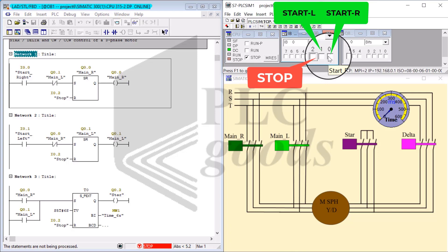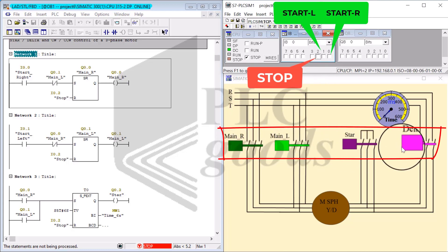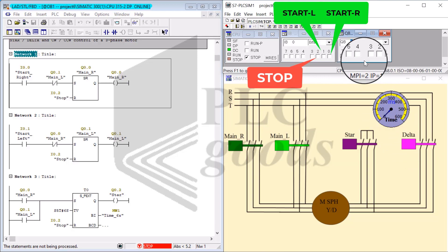To control four outputs, my outputs are main R, main left, star, and delta.